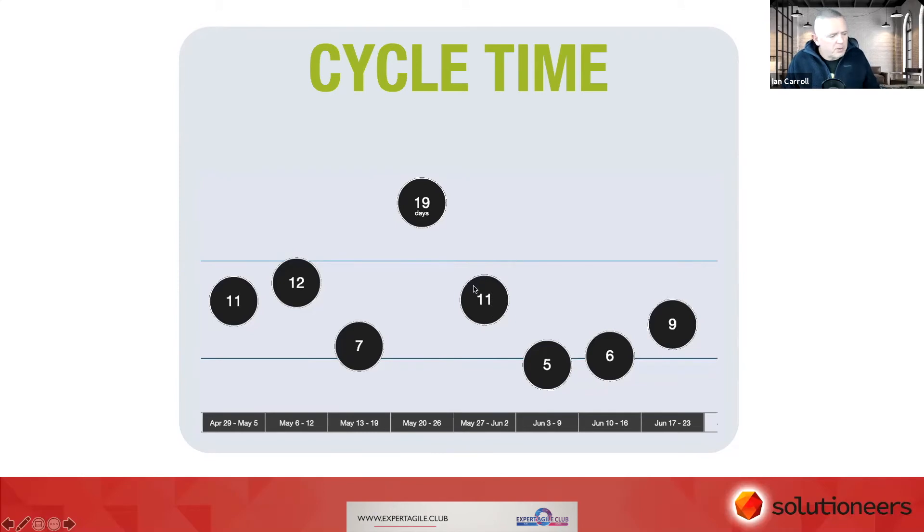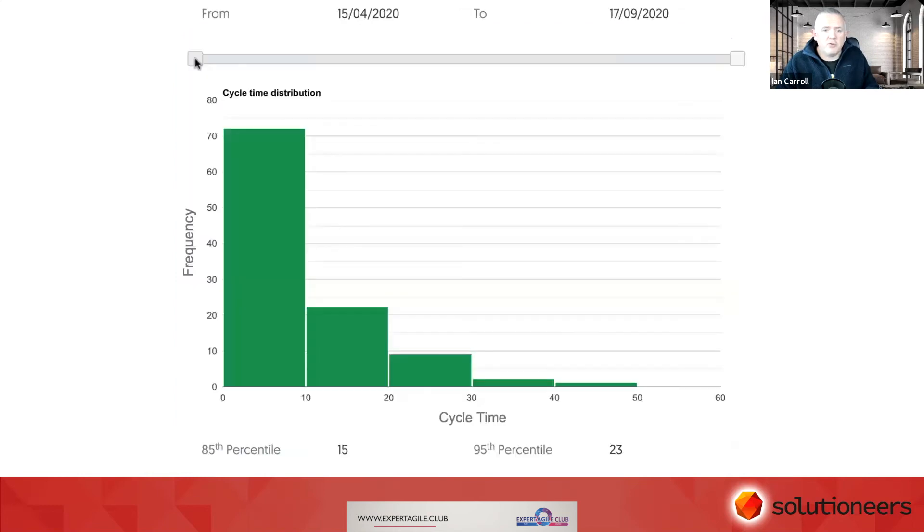Now there are things that will affect that, but there's also another way of looking at cycle time as well. We visualize it in different ways. This is one way—this is what's called a scatterplot. The next way we commonly visualize our cycle time is using a histogram or a distribution.